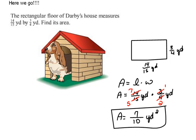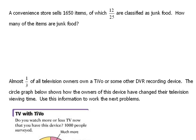Let's try another one. A convenience store sells 1650 items, of which 12/25 are classified as junk food. How many items are junk food? We have to interpret our problems.